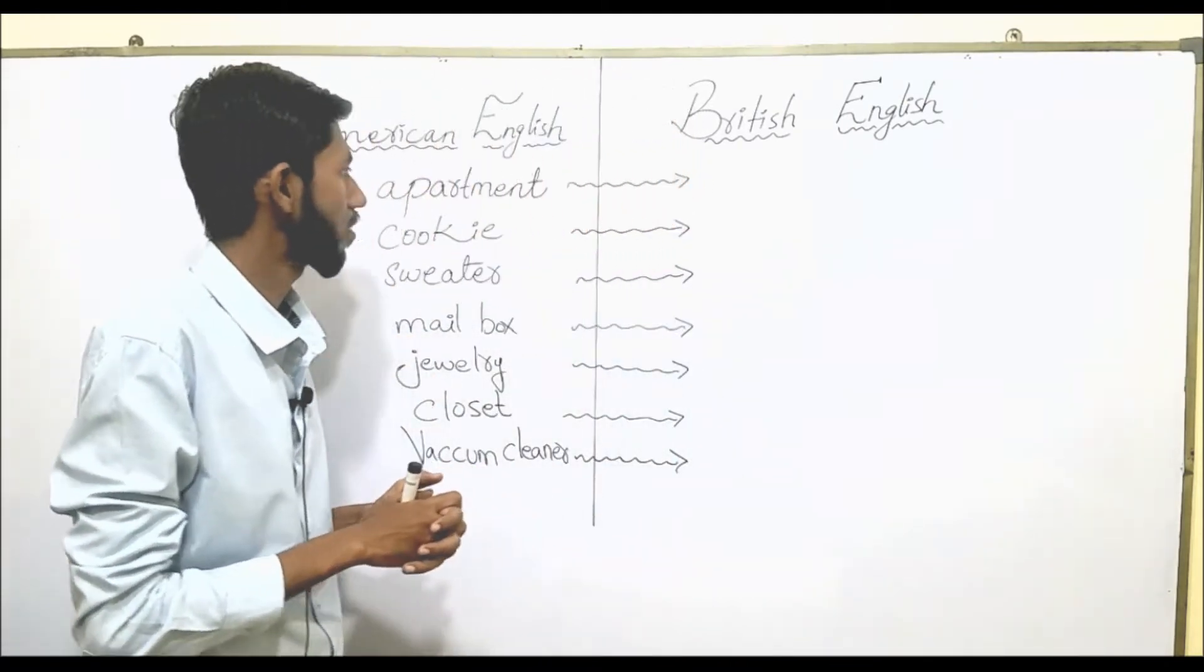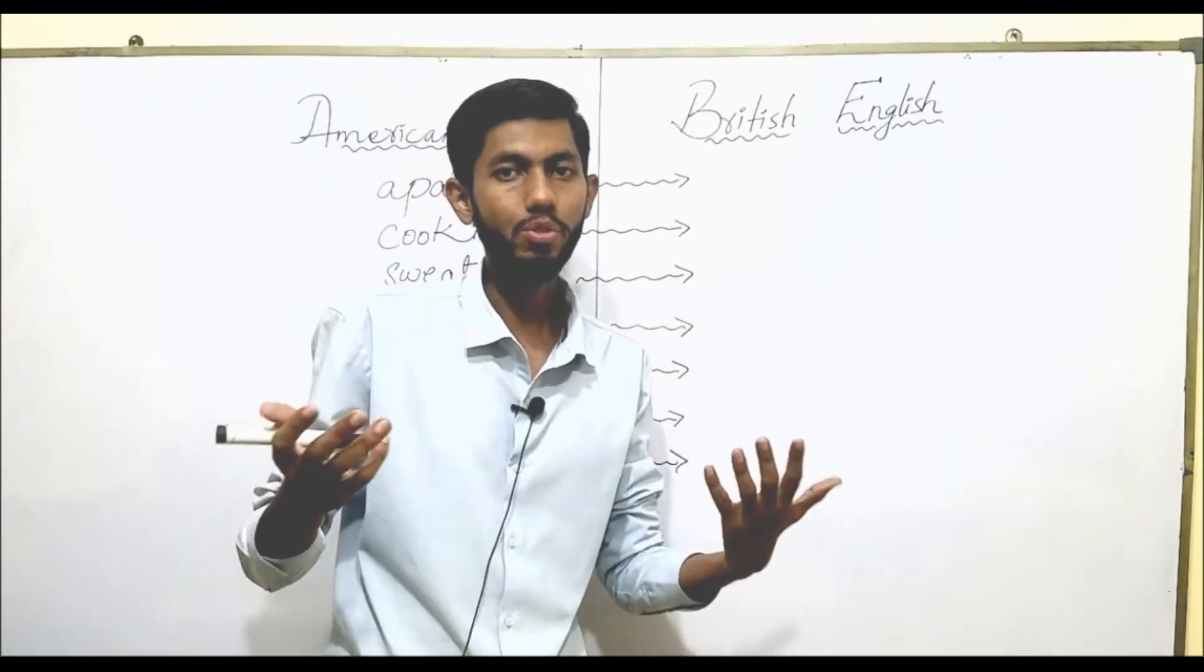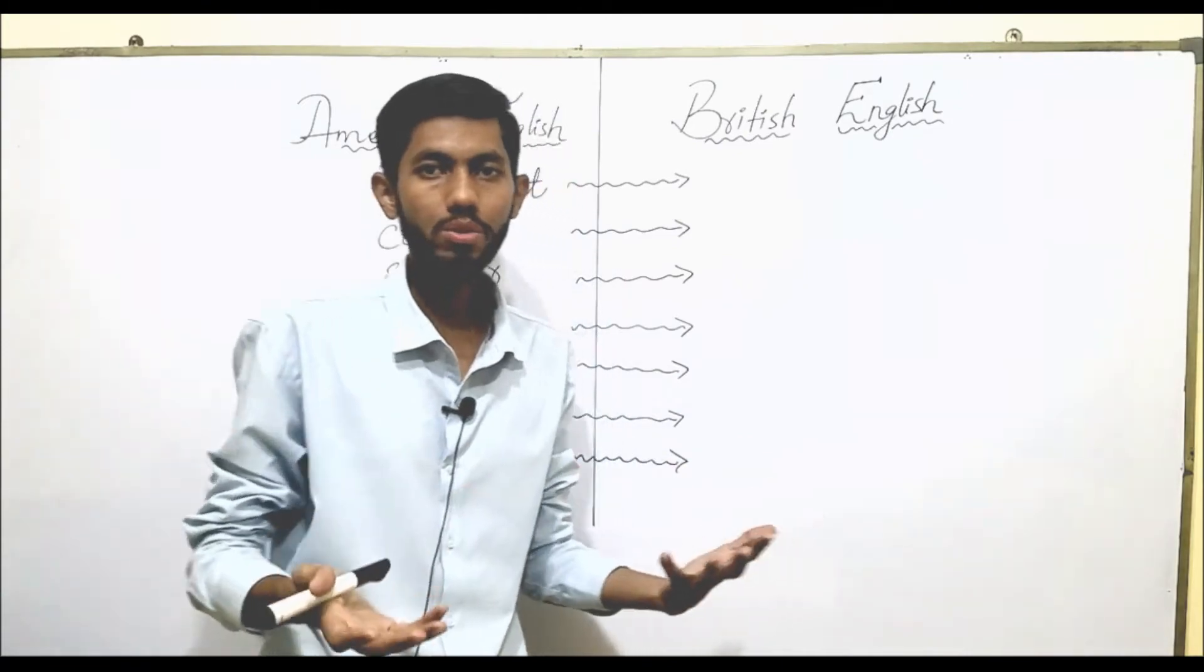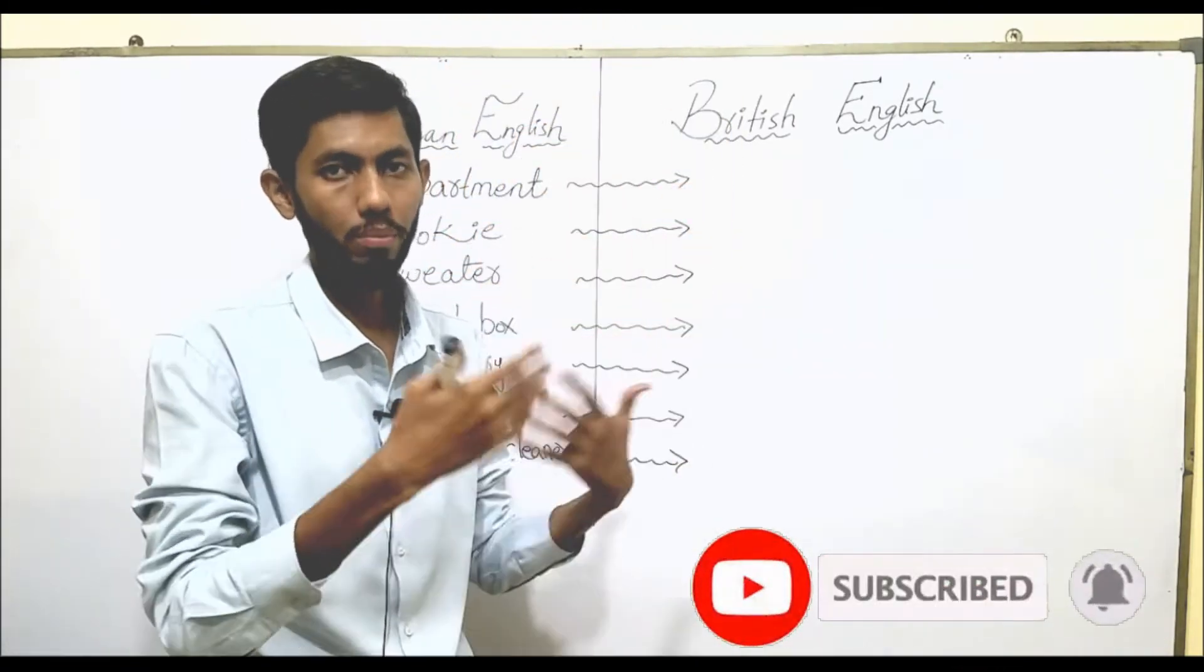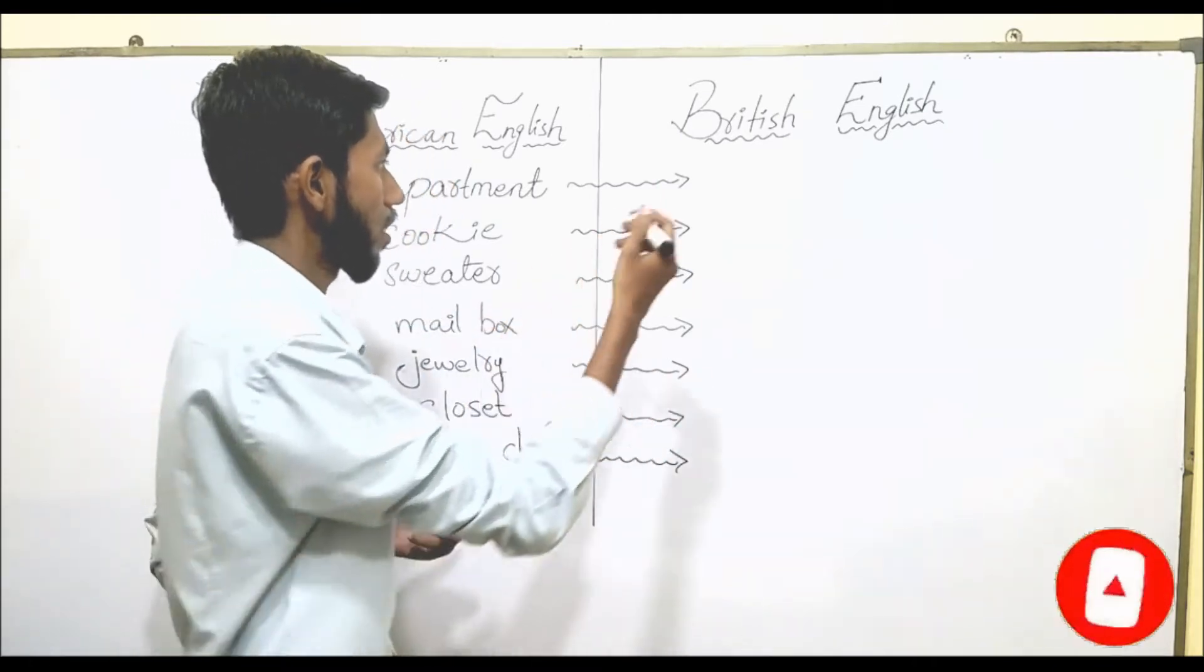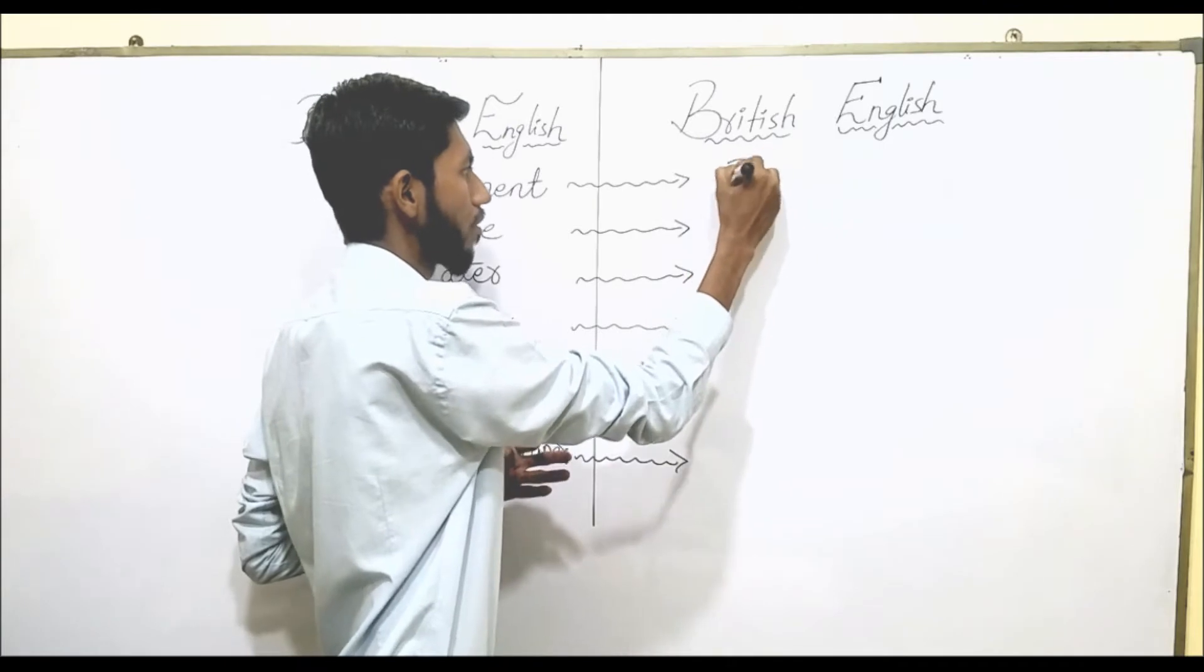So let's discuss the first word. The first word we have here is apartment. Apartment, as you know, there are houses and then there are different floors in buildings where people live in the same building, that's called an apartment. In American English we call it apartment, but in British English we call it flat.